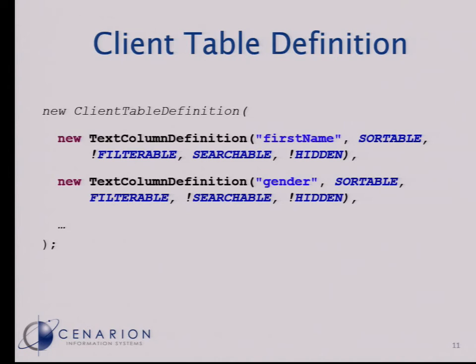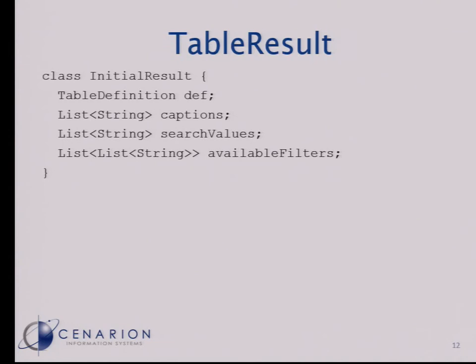What does it look like in code — what we transport from the server to the client? We have this initial result. It consists of the table definition we've just seen. We send out the captions and the search values, because we store those so that when the user comes back to the table, search values are restored from the last time he visited. And we have the filters that should be presented to the user — in our case, the filters were for gender: male, female, or other.